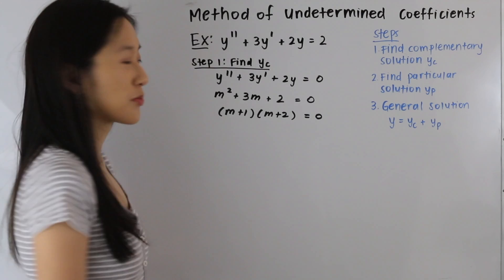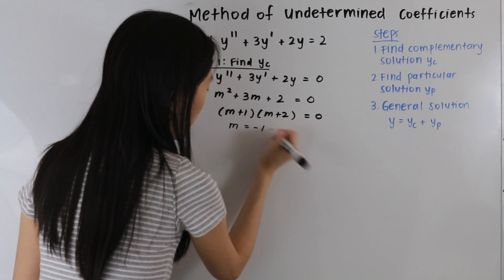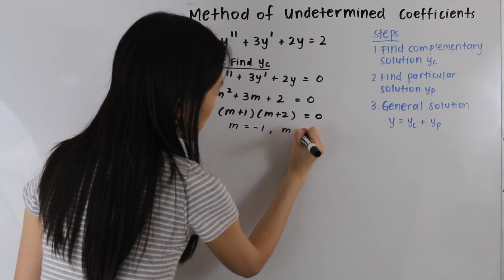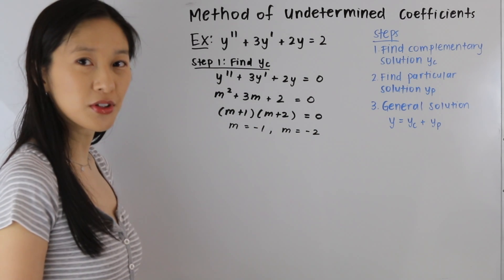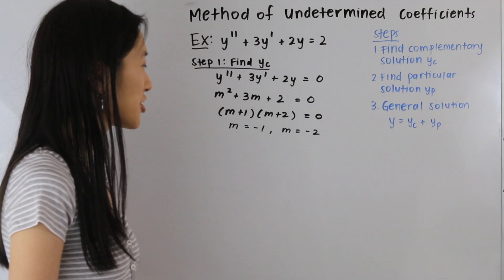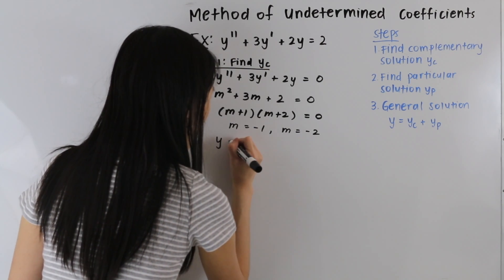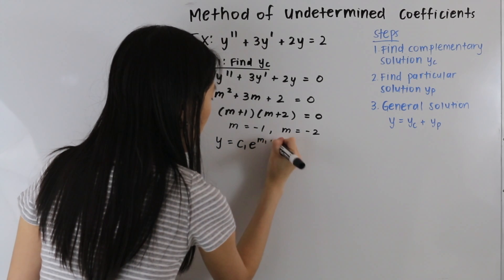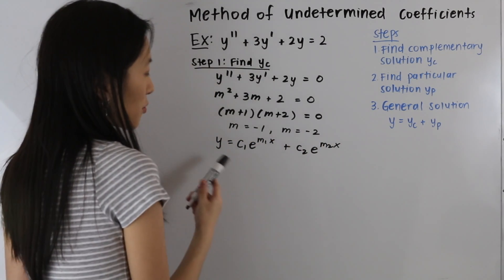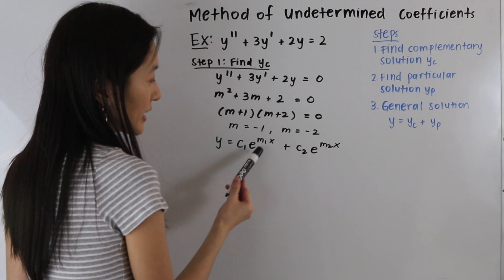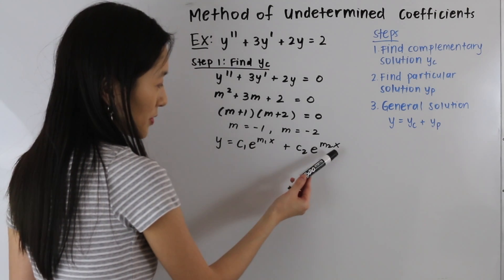We get our two roots: m is equal to negative 1, and m is equal to negative 2. In this case we have two real and distinct roots, so we have a Case 1 situation. That means our solution is going to be of the following form: y is equal to c1e to the m1x plus c2e to the m2x.